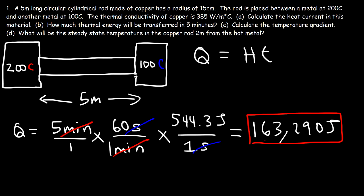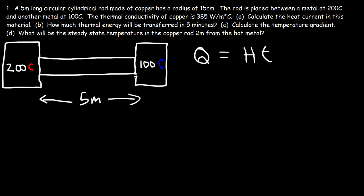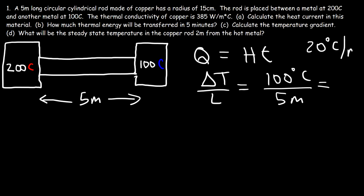Now part C: calculate the temperature gradient. The temperature gradient is the change in temperature divided by the length. In this example, we have a difference of 100 degrees Celsius over a length of 5 meters. So the temperature gradient is 20 Celsius per meter. That's the answer for part C.